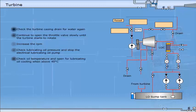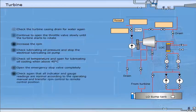Check oil temperature and open for lubricating oil cooling when above 40 degrees centigrade. When the speed control valve is in action, open the emergency stop valve completely. Check again that all indicator and gauge readings are normal according to the operating manual and transfer RPM control to remote control position.